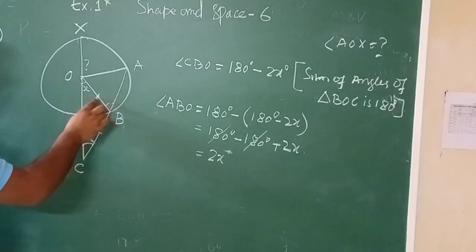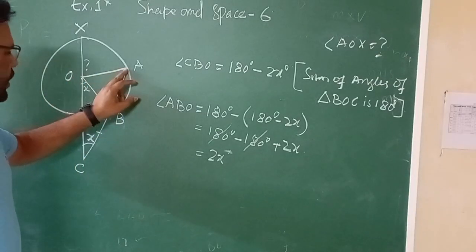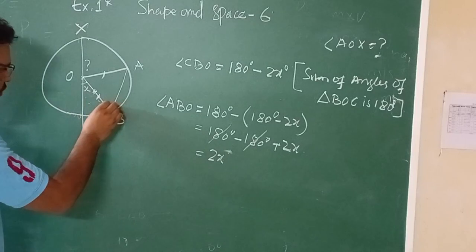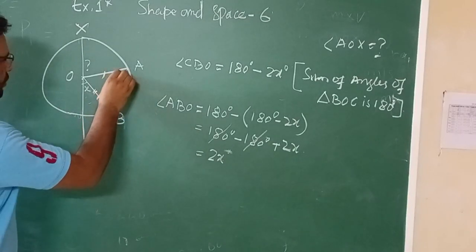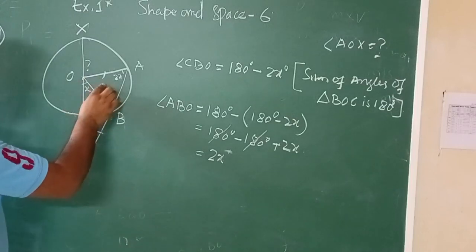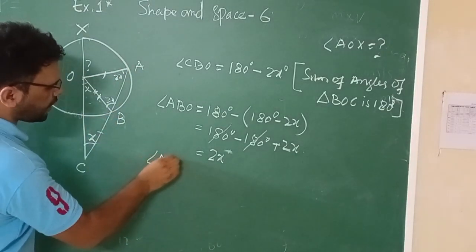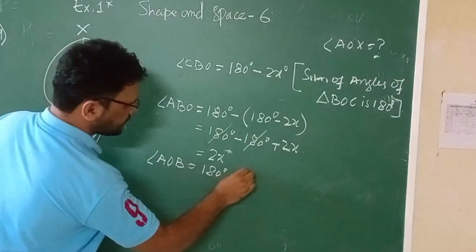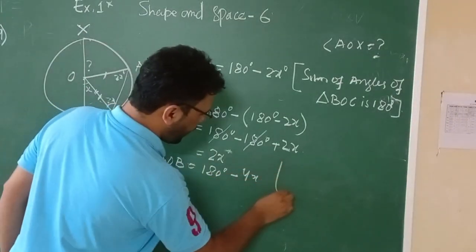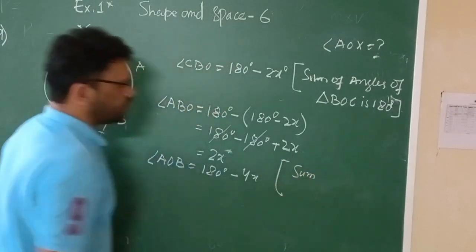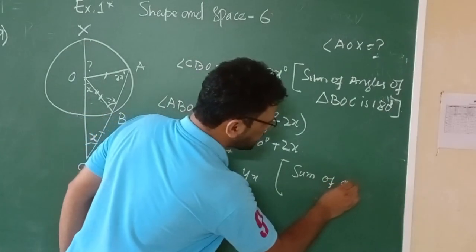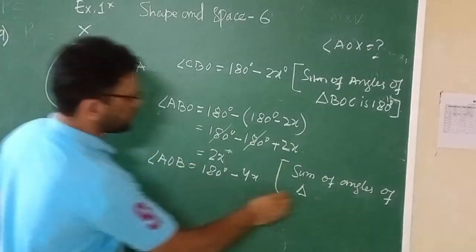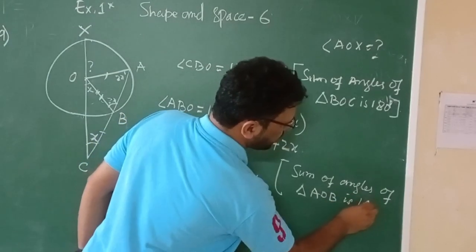From the figure, OB and OA are radii of the same circle, so these two sides are equal. Since angle ABO is 2x, the base angle on the other side is also 2x. From triangle AOB, angle AOB equals 180 degrees minus the sum of these two angles, which is 4x. Using the sum of angles of triangle AOB equals 180 degrees.